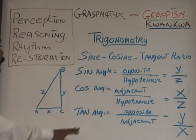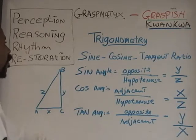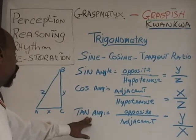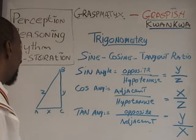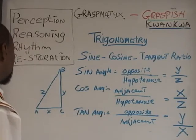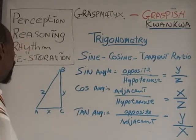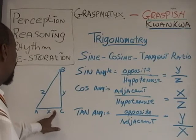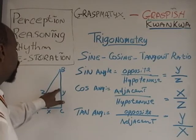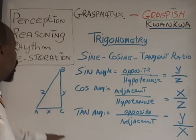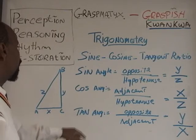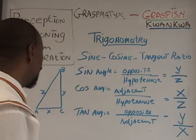Now we have the tangent angle ratio. The tangent angle would be opposite above adjacent. We already learned that this is the adjacent, and this is the opposite. So the opposite over the adjacent — this would be above that when you're trying to find the tangent angle.